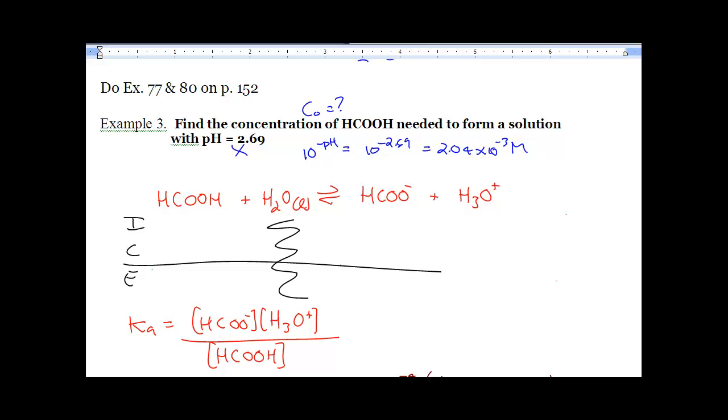We also know the Ka. That's on our chart. So we're given X and we're given the Ka and we're going to solve for C0. So the initial concentration is unknown, it's right there. The products are 0, 0 because we have nothing and that number 2.04 is littered throughout the whole ICE table. So just start throwing it in, that's going down by 2.04.